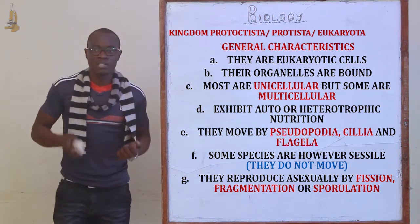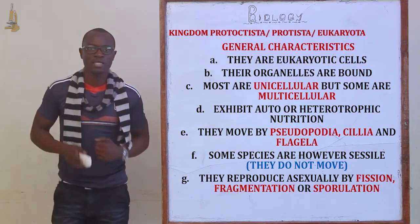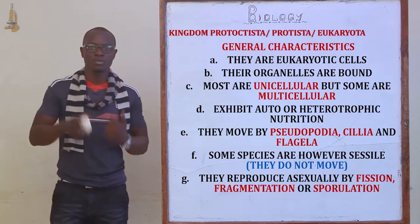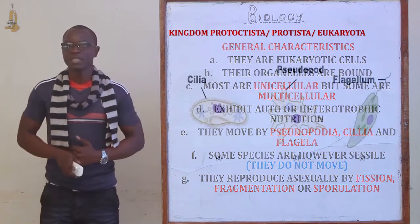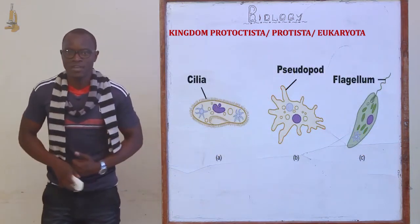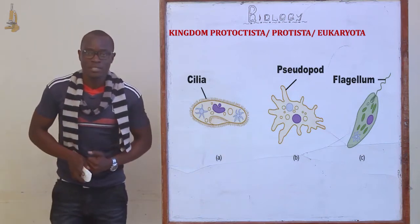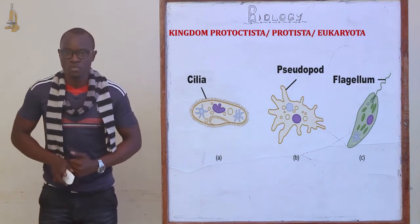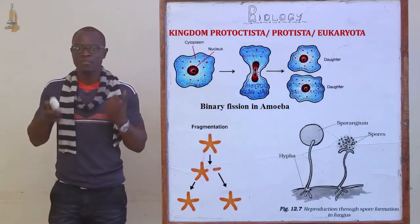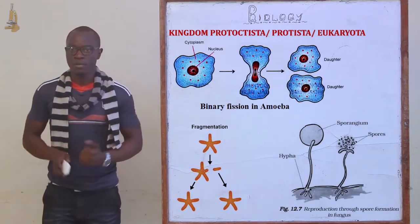They are also unicellular. The nutrition for these organisms is basically autotrophic or heterotrophic mode of nutrition. They mainly move by pseudopodia, cilia, and flagella. Some of them are sessile, meaning that they cannot move. They reproduce asexually by either fission, fragmentation, or sporulation.